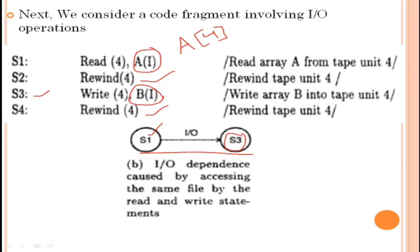The read and write statements S1 and S3 are IO dependent on each other because they both access the same file. The data dependency relationship should not be violated during program execution. These two statements have IO dependency because they use the same file. To execute these two instructions we require the same file, and both are dependent on each other.